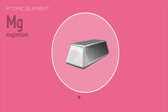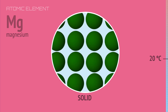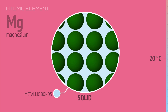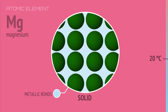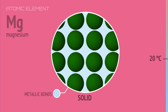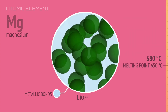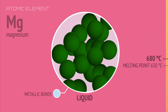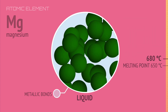Magnesium is a solid at room temperature. The magnesium atoms are held in fixed positions by strong metallic bonds, and they can't break free of these bonds until the temperature reaches 650 degrees Celsius, the melting point of magnesium.